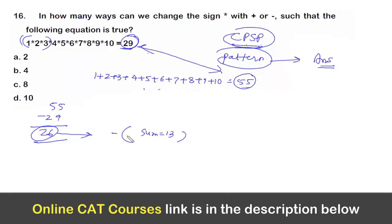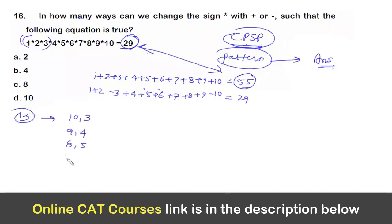So this is quite helpful in LRDI. If I can take minus 10 and minus 3, rest everything is same, I will be getting 29. So one way of getting the sum 29 is to change 10 and 3, or to change 9 and 4, or to change 8 and 5, or to change 7 and 6.